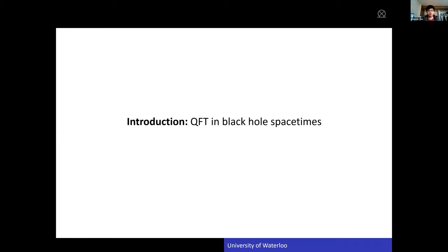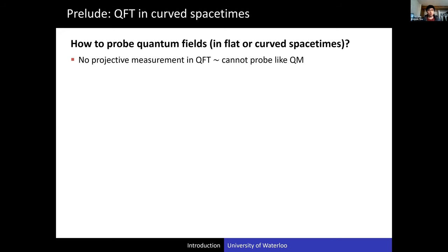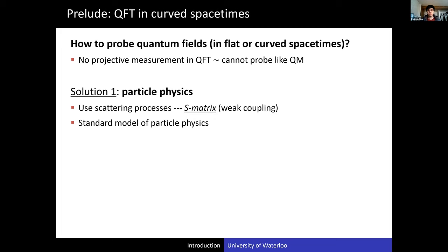Let us do a mini crash course on QFT in black hole spacetimes. How do we usually probe quantum fields, whether in flat space or in curved spacetimes? Fundamentally, we know that there is no projective measurement in QFT, which is why you don't study QFT like quantum mechanics where you do projective measurements. But there are other ways. For example, if you are in a weak coupling region, one solution is to do particle physics — you use scattering processes, you use the S-matrix, and you get stuff from the standard model of particle physics.